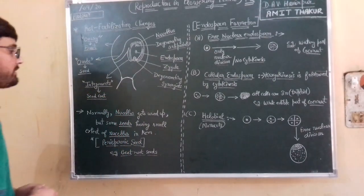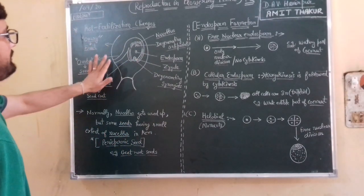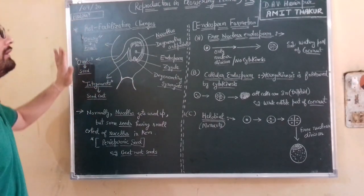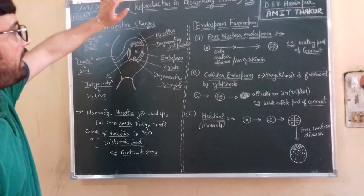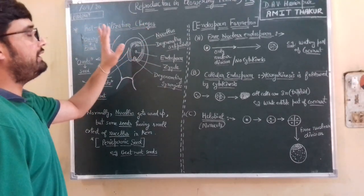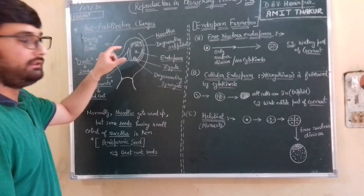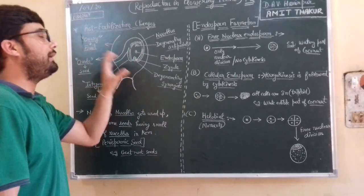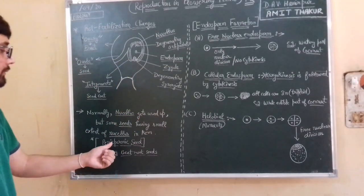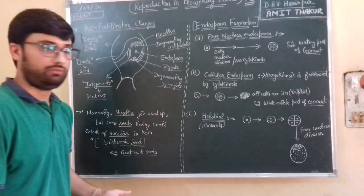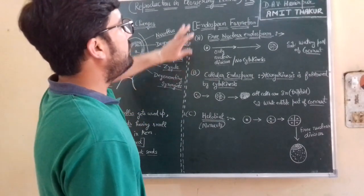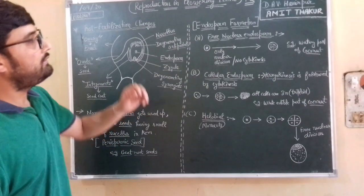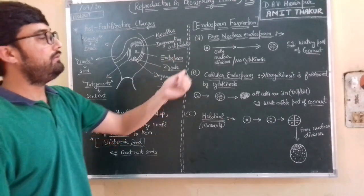So this is all about post-fertilization changes: fruit, seed, and seed coat. And regarding nucellus — if nucellus is present after fertilization, we call the seed a perispermic seed, like in beetroot.